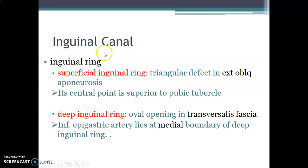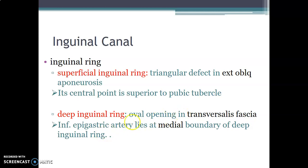The inguinal canal has two rings. The superficial inguinal ring is a triangular defect on the aponeurosis of the external oblique abdominis, located approximately one centimeter superior and lateral to the pubic tubercle. The deep inguinal ring is oval and located on the fascia transversalis, which is the deep fascia of the abdomen.